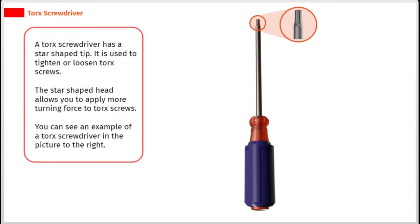A torx screwdriver has a star shaped tip. It is used to tighten or loosen torx screws. The star shaped head allows you to apply more turning force to torx screws. You can see an example of a torx screwdriver in the picture to the right.